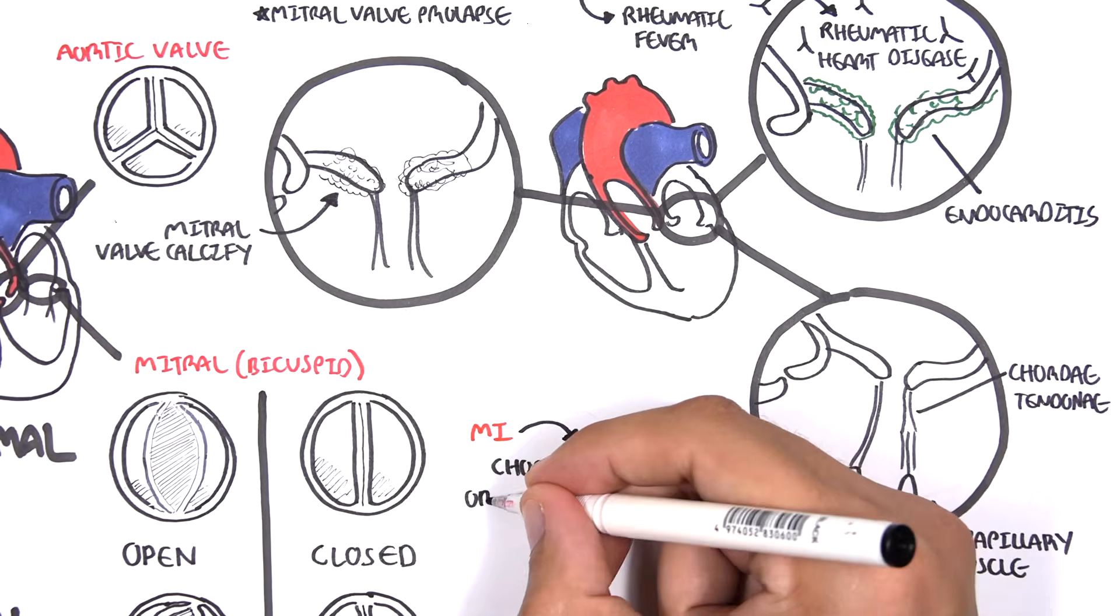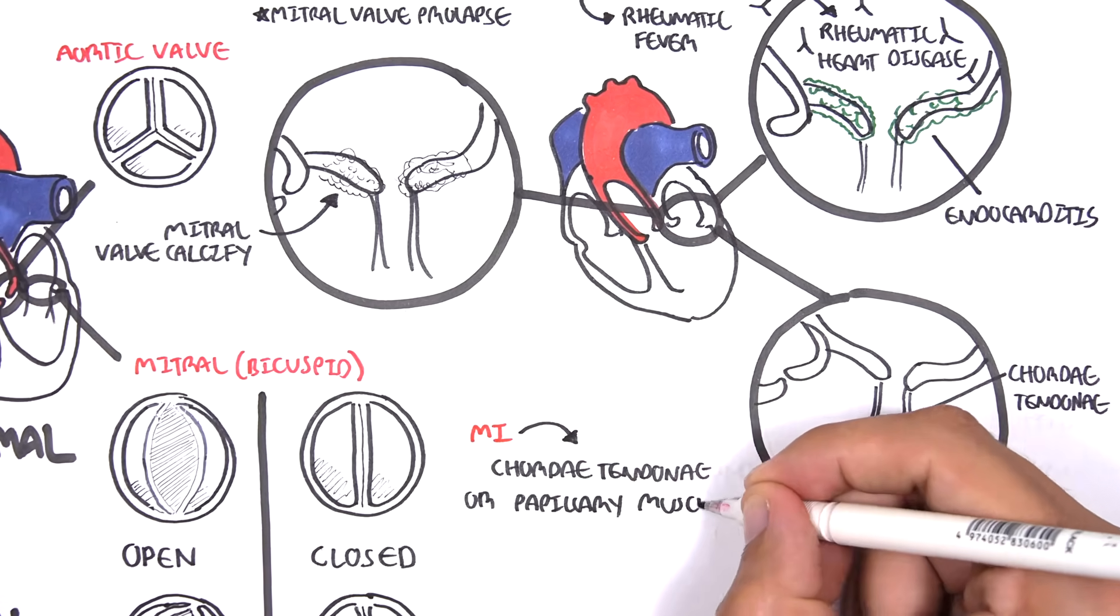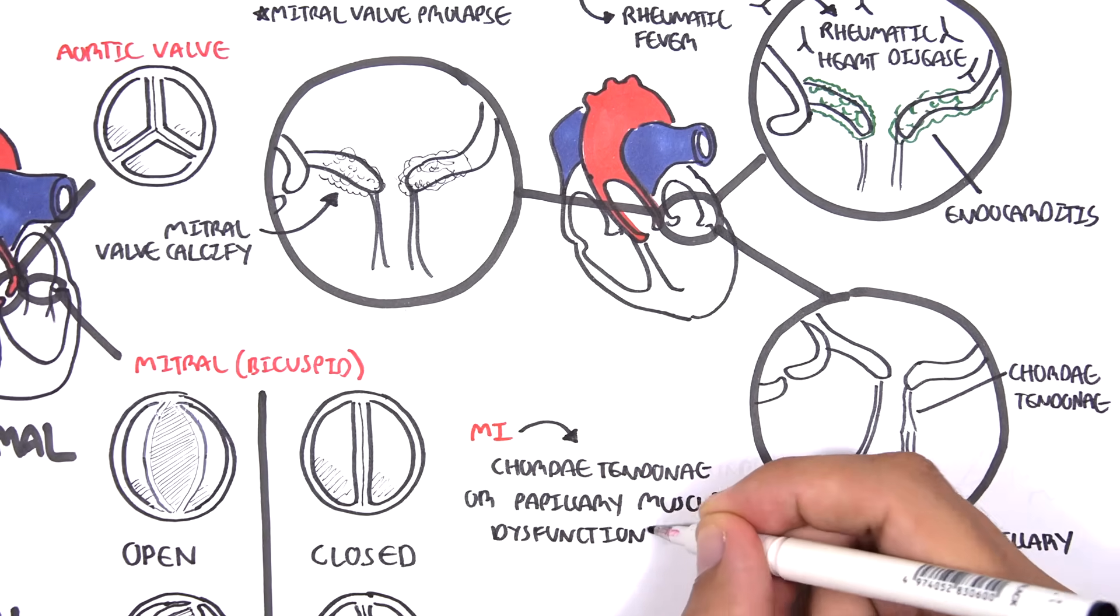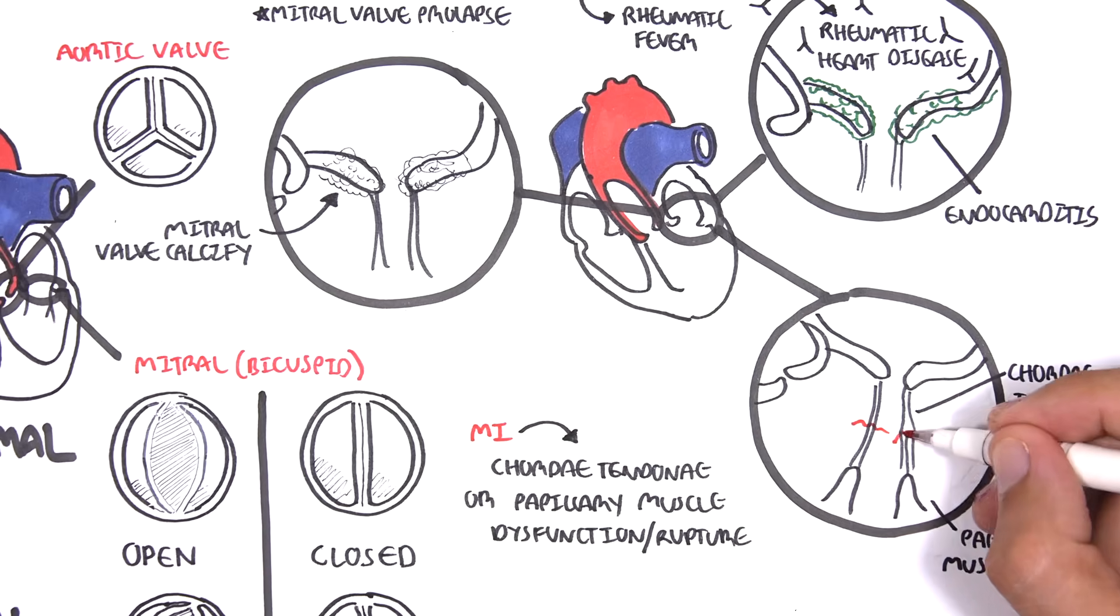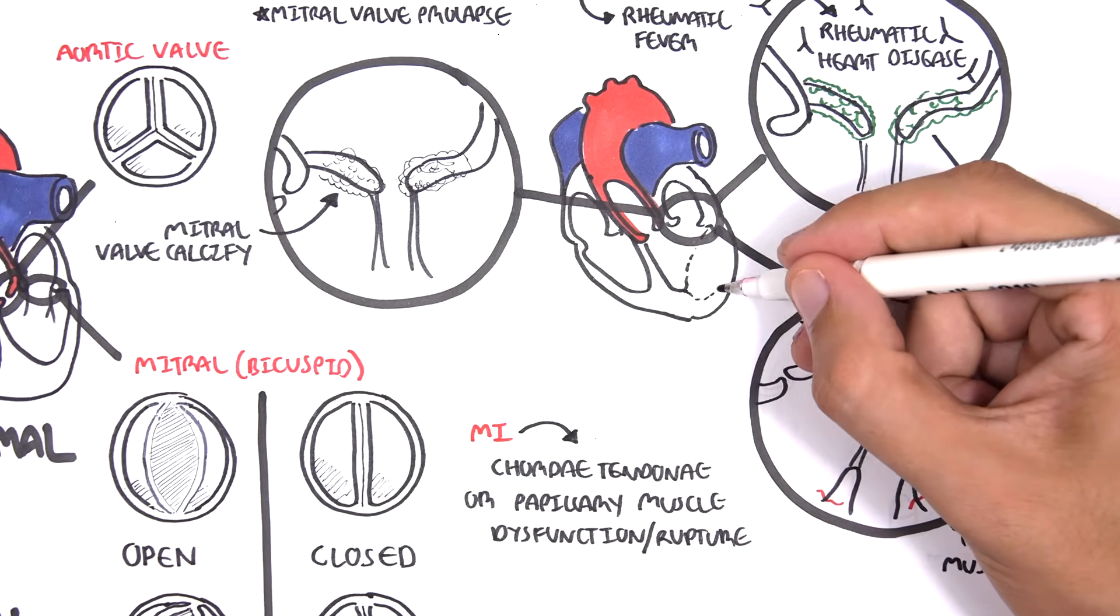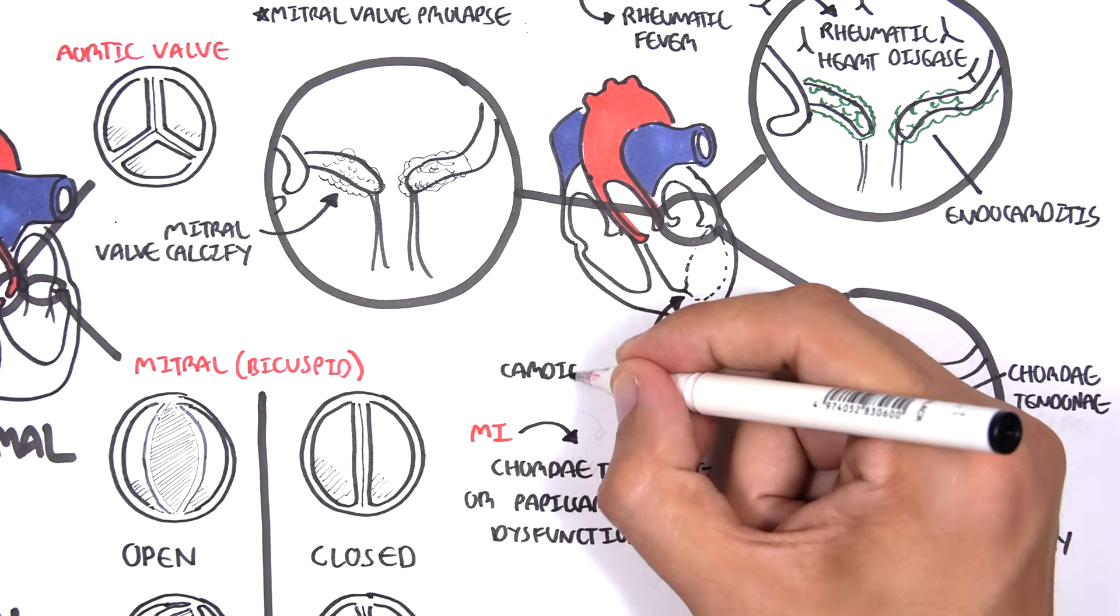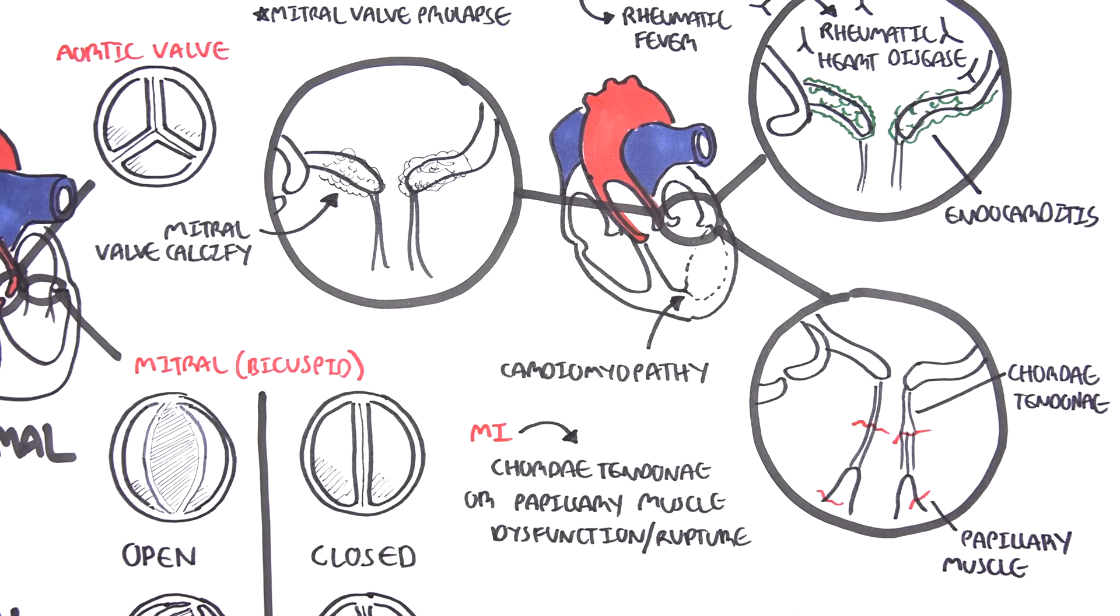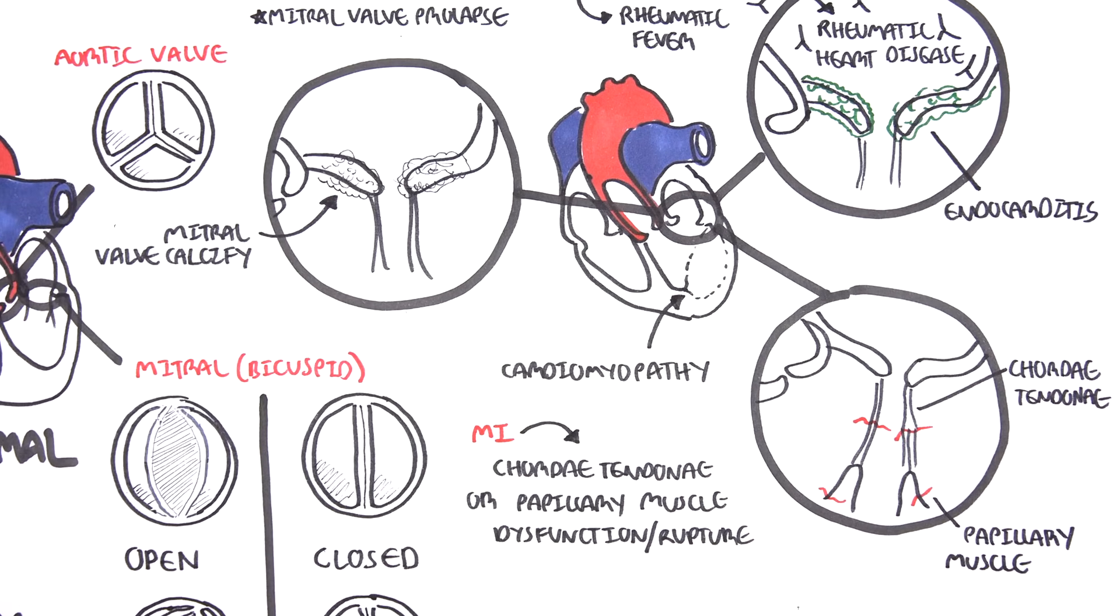When you have a myocardial infarction, this can result in chordae tendineae or papillary muscle dysfunction or rupture, which can lead to mitral regurgitation because these structures are not working properly. The final cause of mitral regurgitation to note is cardiomyopathy, which includes dilated or hypertrophic cardiomyopathies.